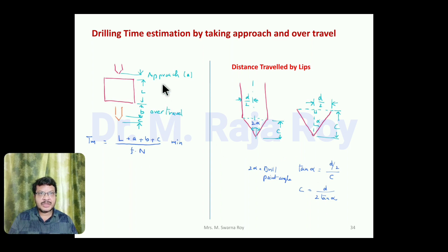In the examination, if approach and overtravel are not given, you can roughly take the values like 3 mm to 5 mm. This particular C distance, the distance the tip of the drill bit has to move, you can find if α value is given. If A, B, C values are not given directly, you can take the length of the hole and find the time.